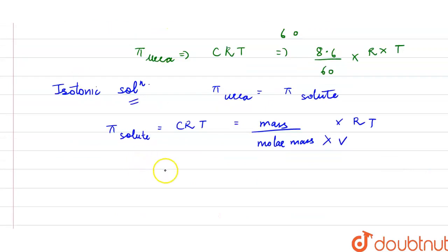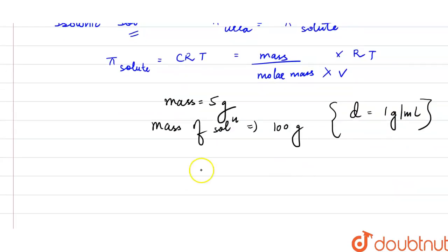5 percent solution, how we can write it? If mass is 5 gram and if we are considering the water, it would be 5 percent, so mass of the solution would be 100 gram if I am considering density of water 1 gram per ml. What will be the volume of the solution?